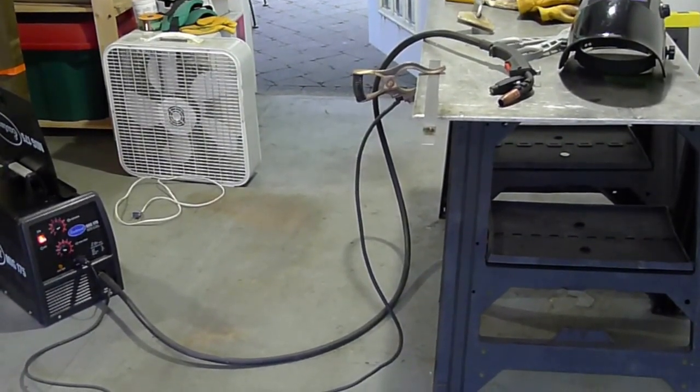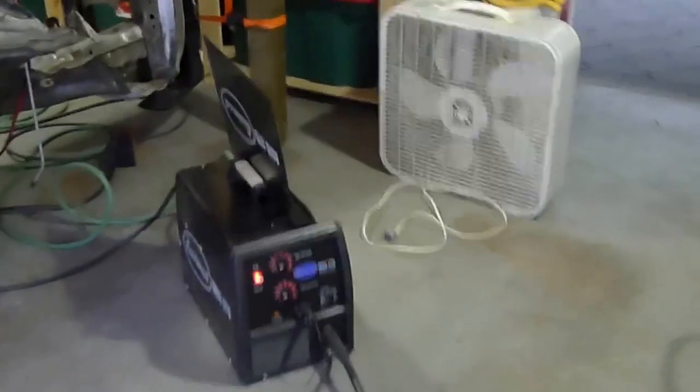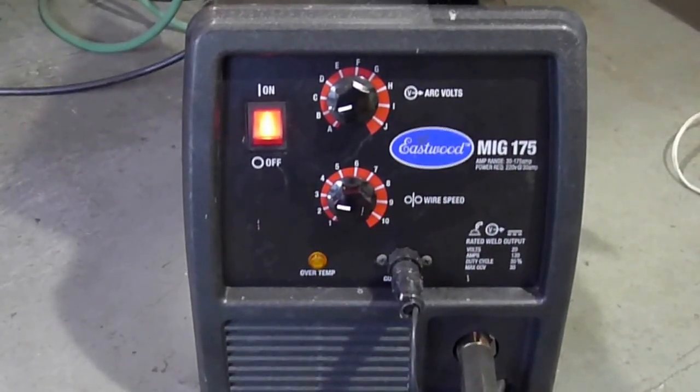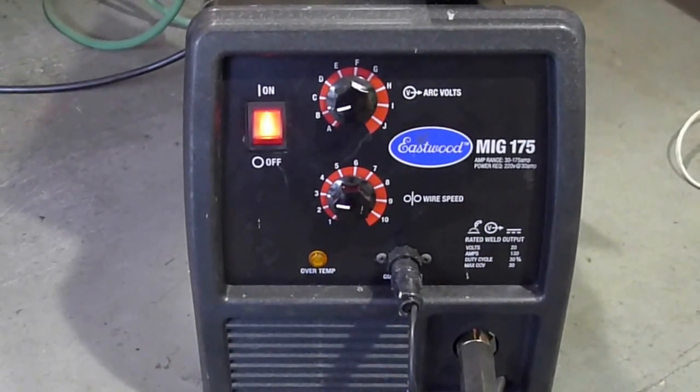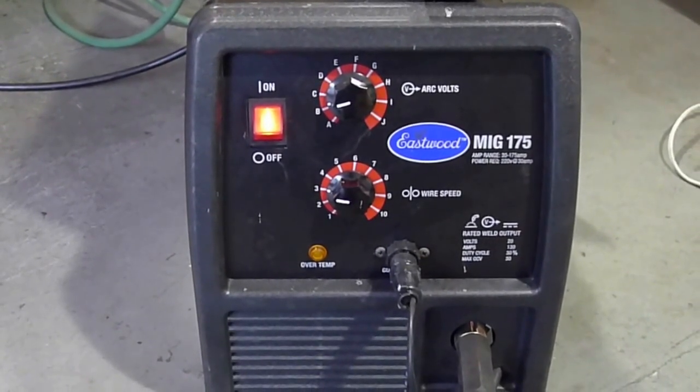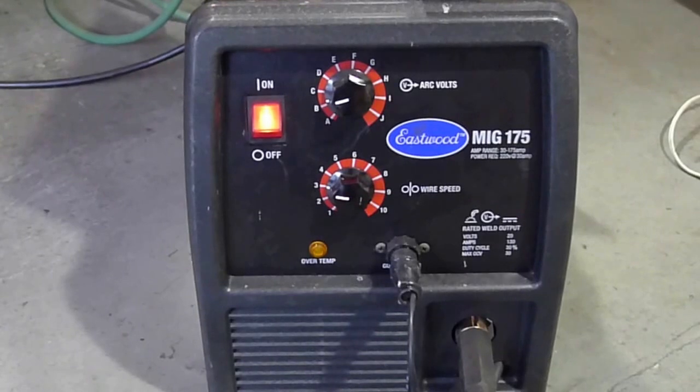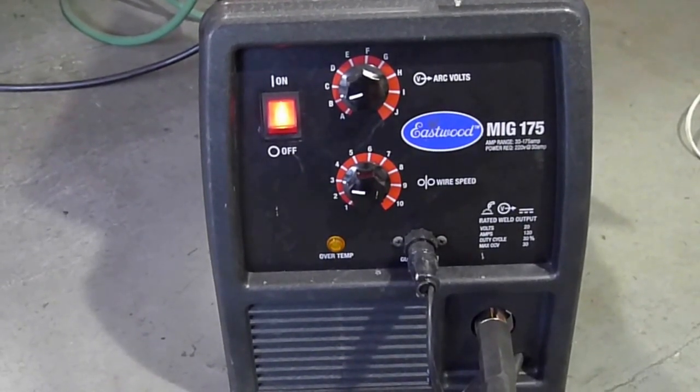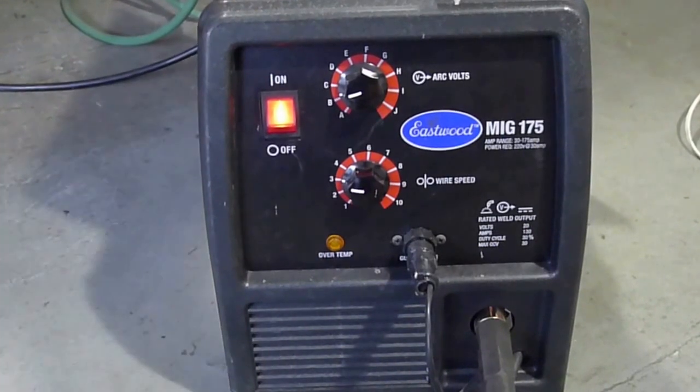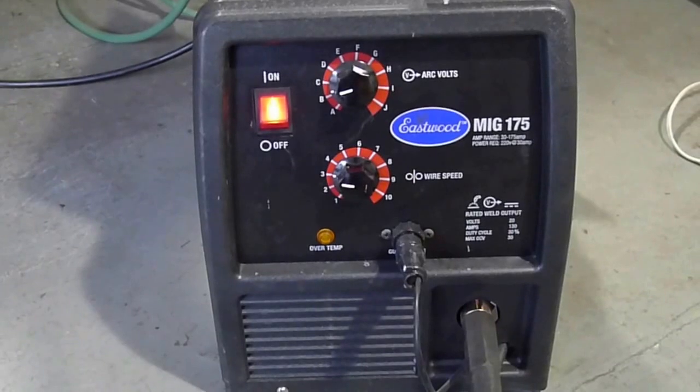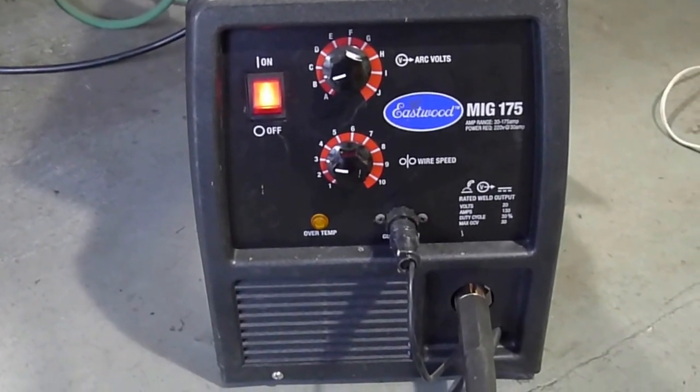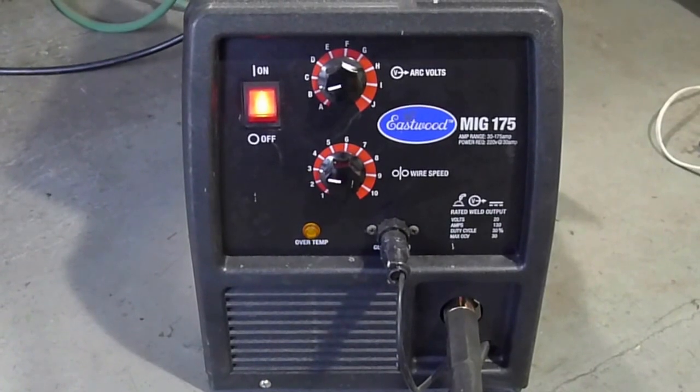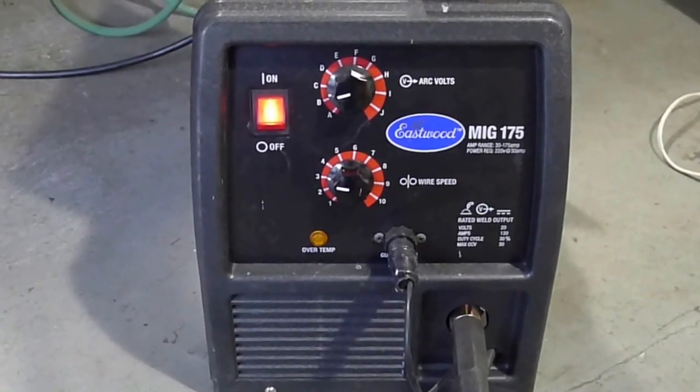On my MIG welder, I normally use 0.023 mild steel wire. I normally set this welder at C level and about 3, that's fairly hot. Sometimes I'm at just shy of C and about 2.8 if the welding is really critical. For the 0.035 bronze wire, I've dialed it down just above B with the wire speed still up at 3, about 120 inches a minute.